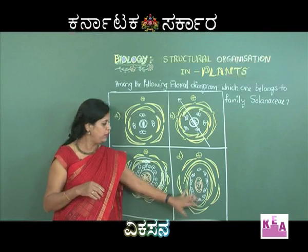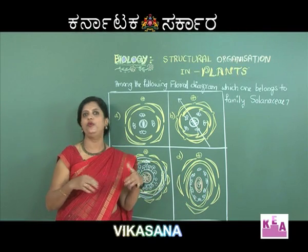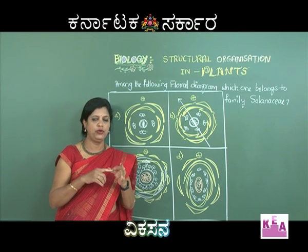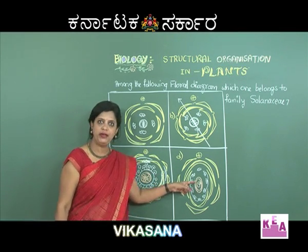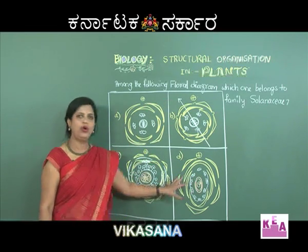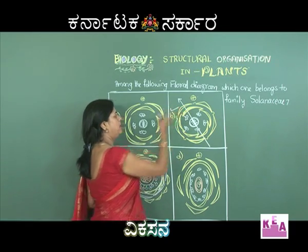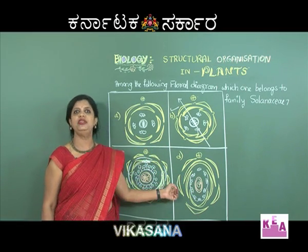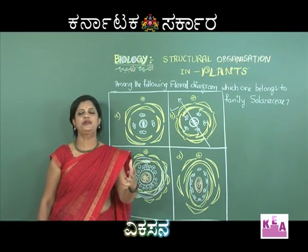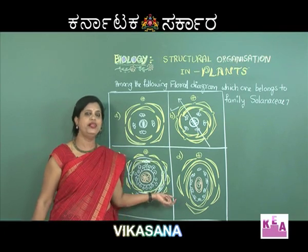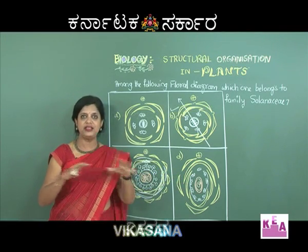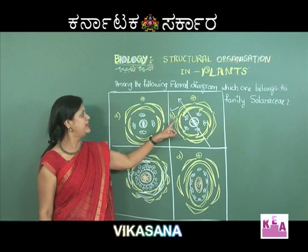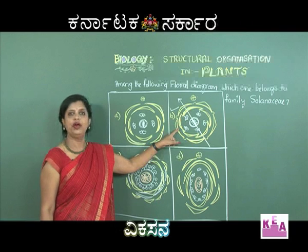Among all four options, the right answer is B, which belongs to family Solanaceae — it is a zygomorphic flower. Understanding each smaller unit of a floral diagram makes it very simple — not by rote learning, but by understanding every detail. Once you understand the small units, any floral diagram or formula becomes easy to analyze.